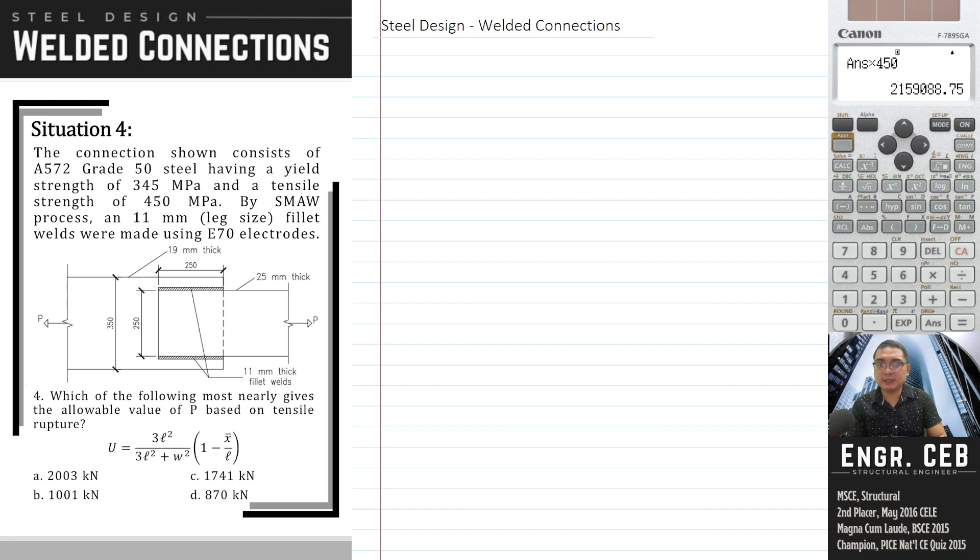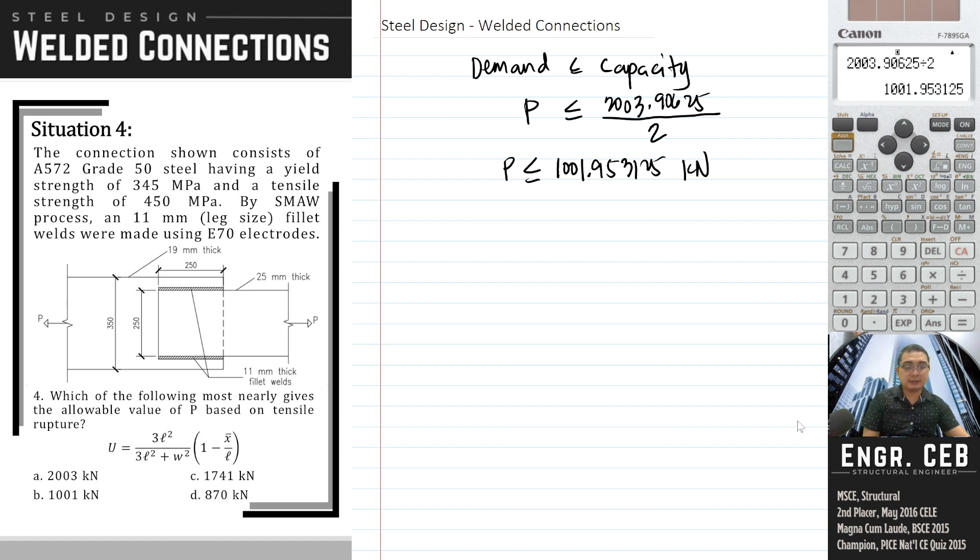For the allowable value of P, again we compare demand and capacity. The demand is P and the capacity is 2003.91 kN. We divide by the factor of safety for tensile rupture, which is 2. Therefore, P equals 1001.95 kN. That is letter B.